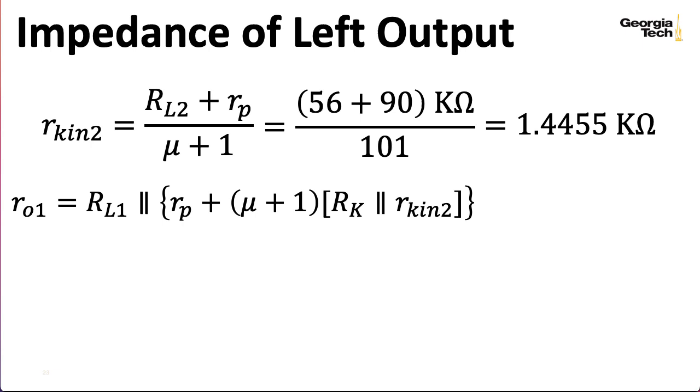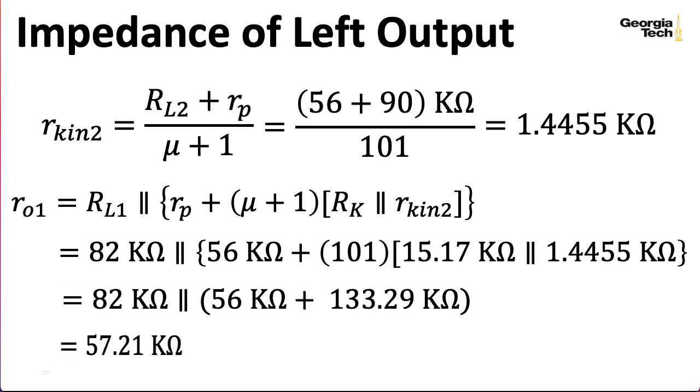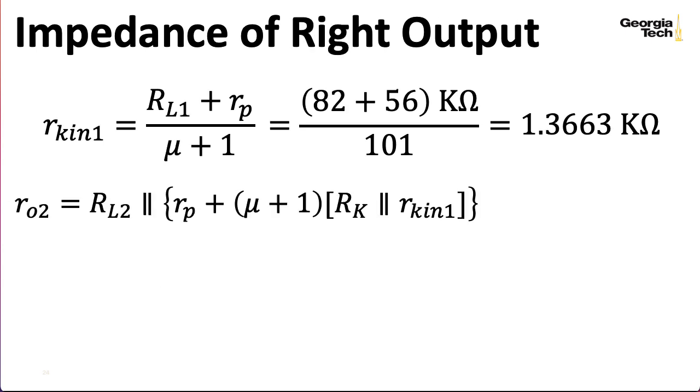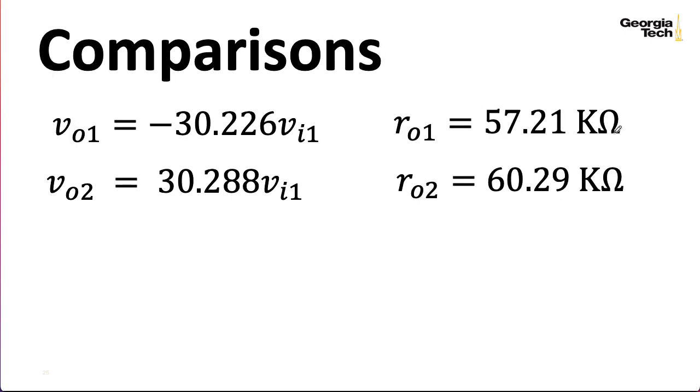So what about the output impedances? So the impedance for the left output, using the formulas we derived in the previous lecture, turns out to be something like 57.2 kiloohms. And the impedance of the right output turns to be something like 60.29 kiloohms. And if I compare the outputs, the output resistances are close, but they're not the same. And that's not surprising, because remember, those load resistances are different. But on the other hand, if I look at the absolute value of the gains, these are pretty close together, precisely because Randall Smith used different load resistors.